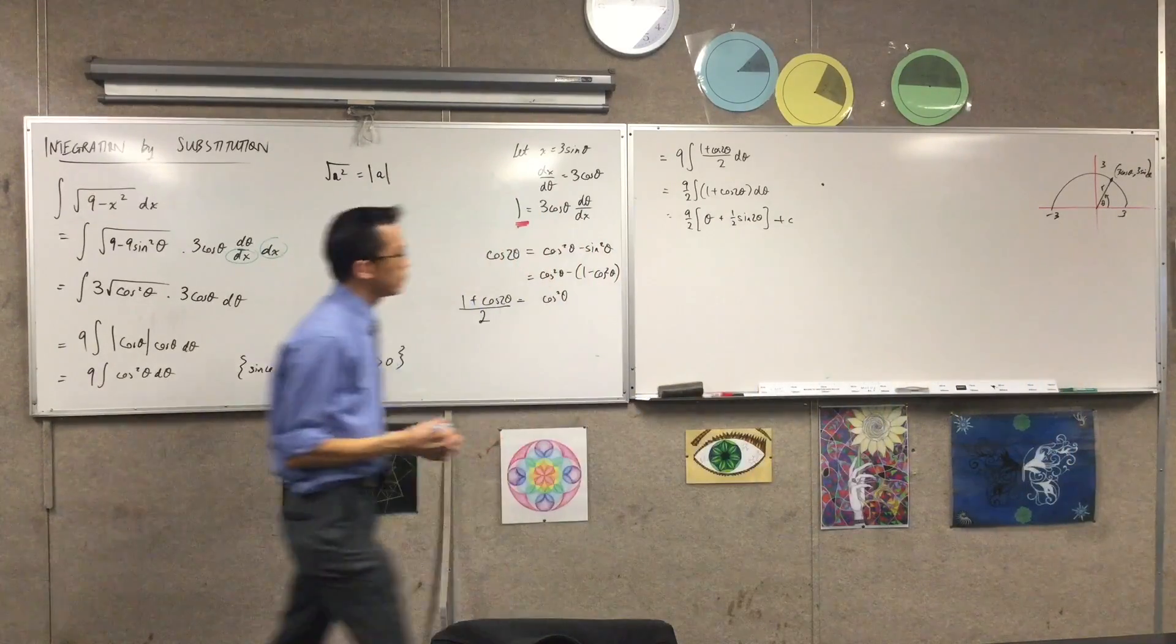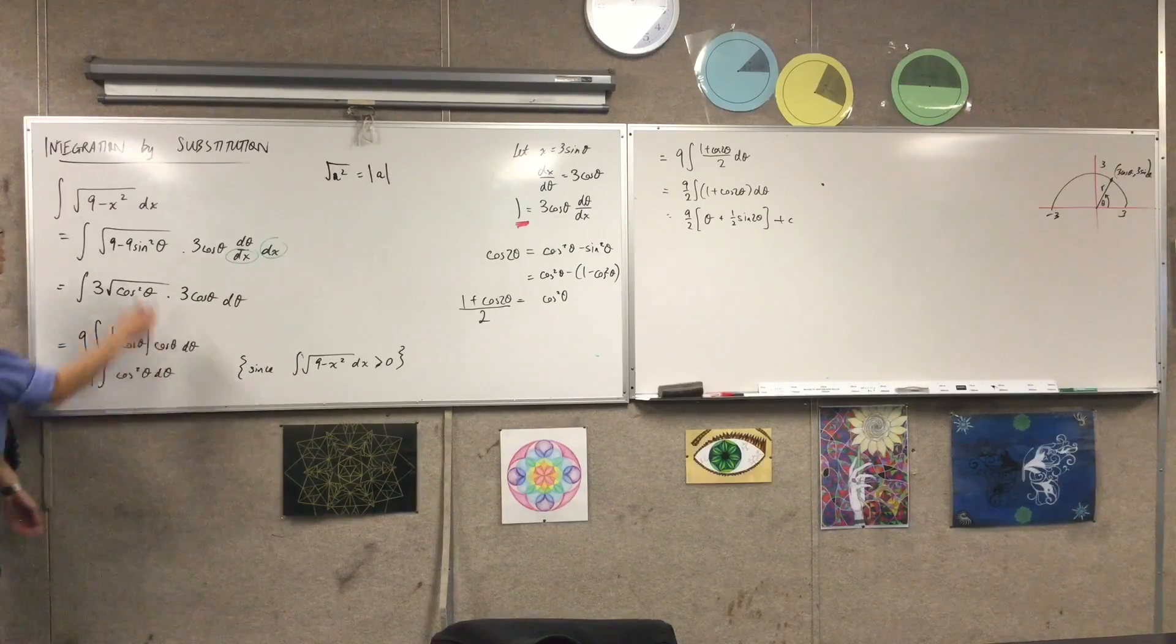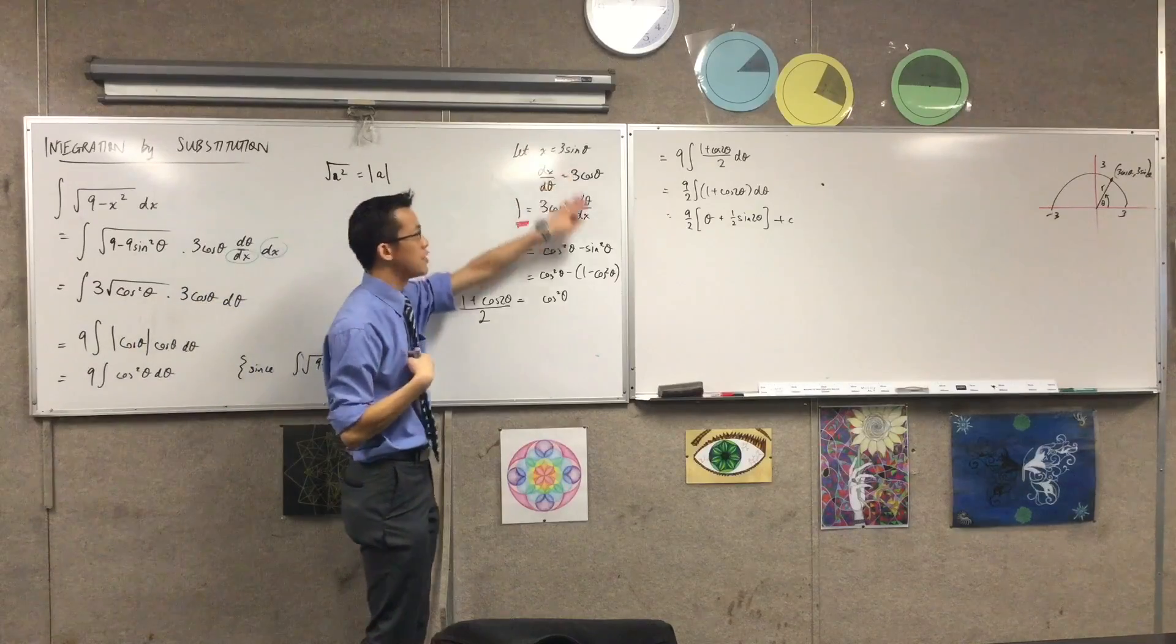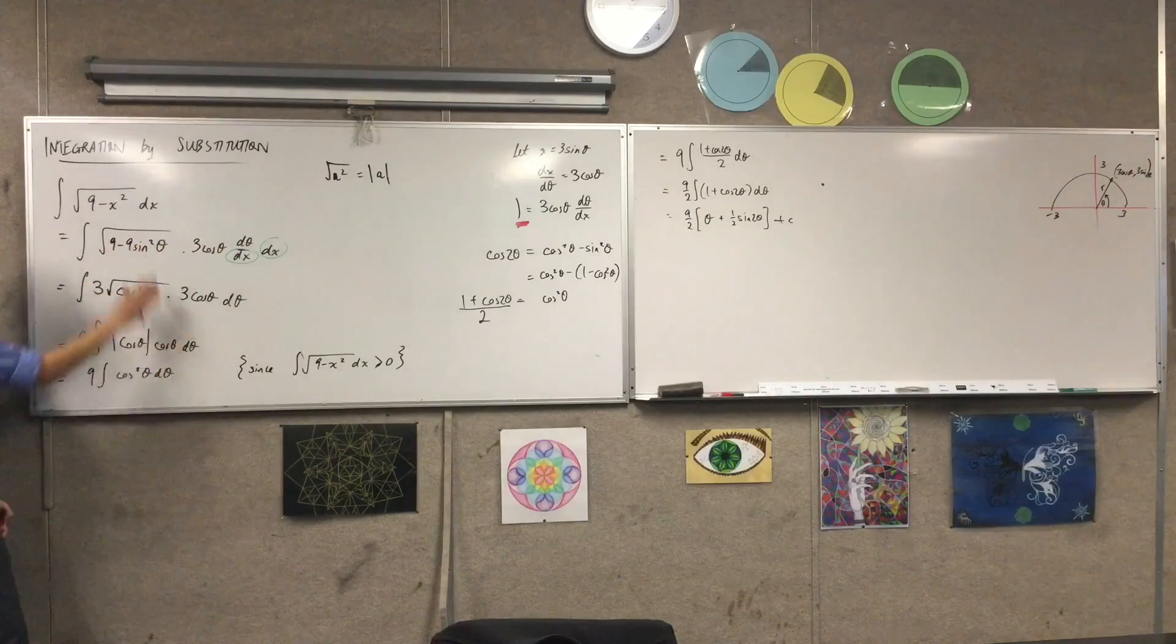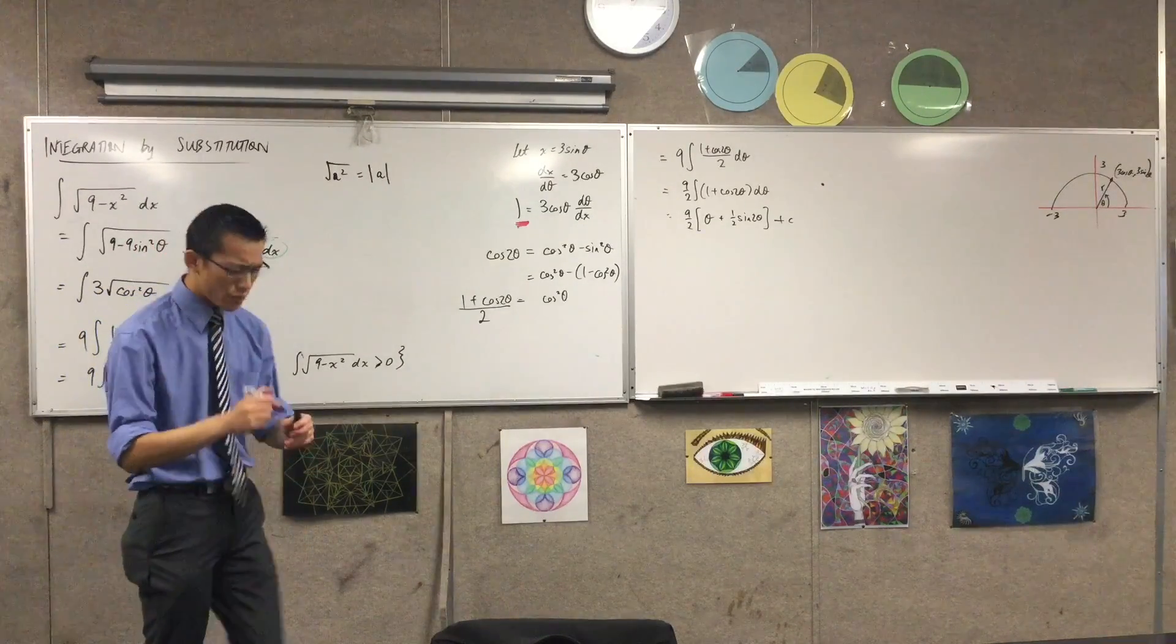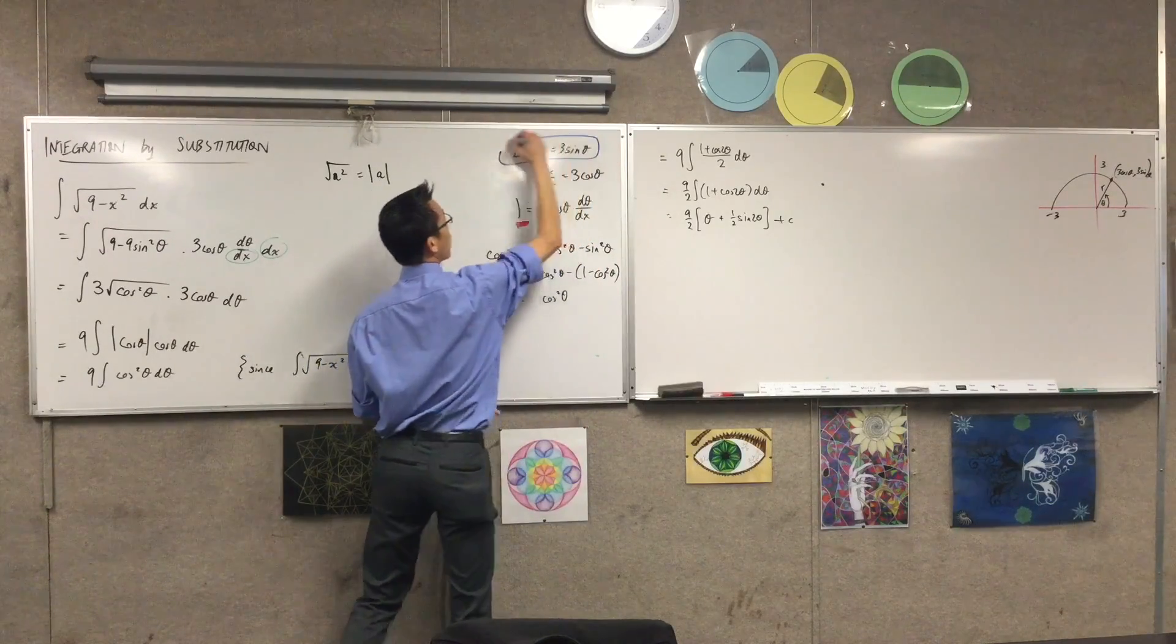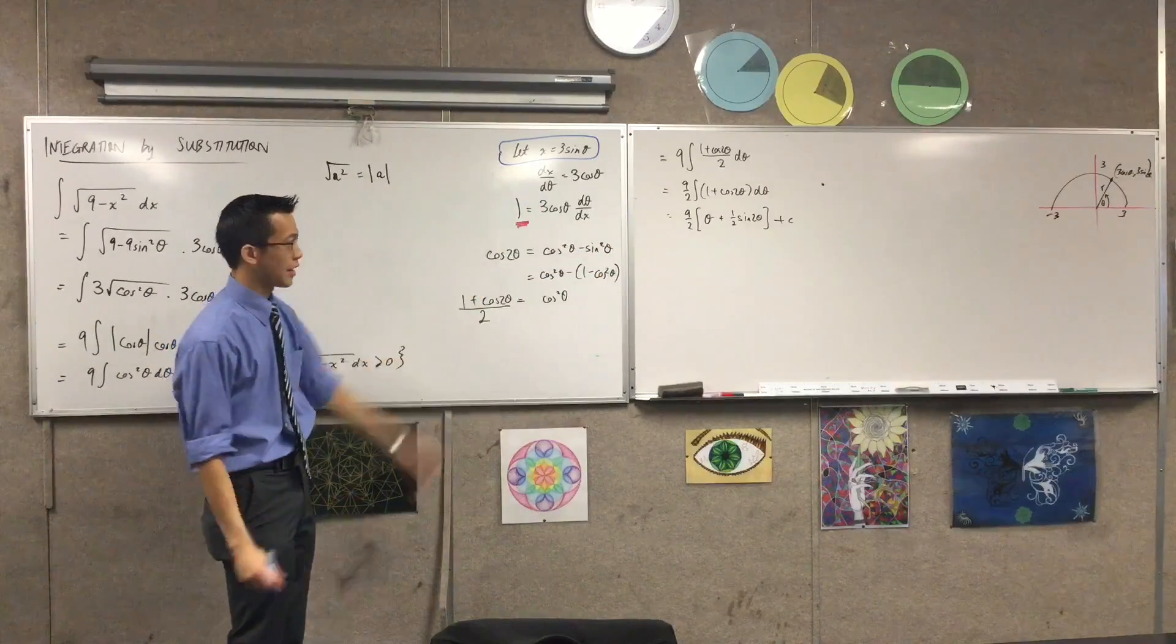Now this is excellent, but, so I've integrated, but it's not answering the question, because the original question had nothing to do with theta. I introduced theta to help me go through the actual process of integration, to deal with the calculus bits. But now that I've done that, I've got to get back to x's. So, how am I going to do that? You've got to return to your original substitution. And we're going to have to do two things with him to completely re-translate this back into x's.